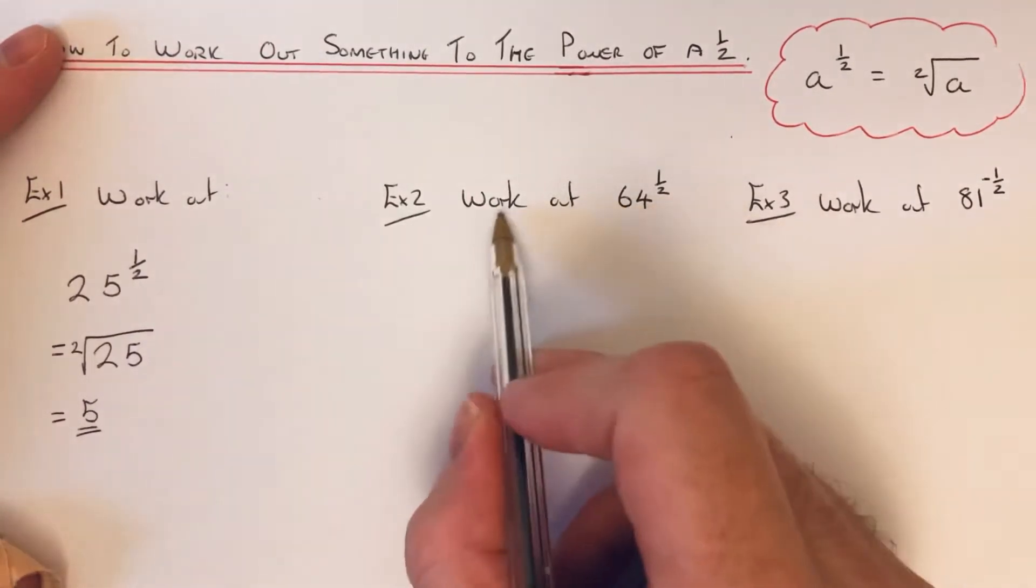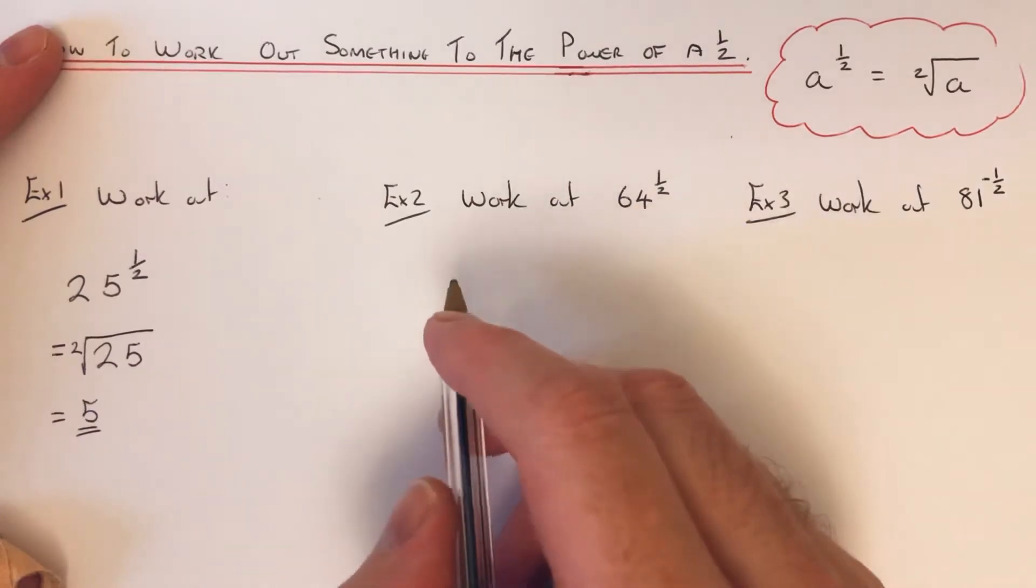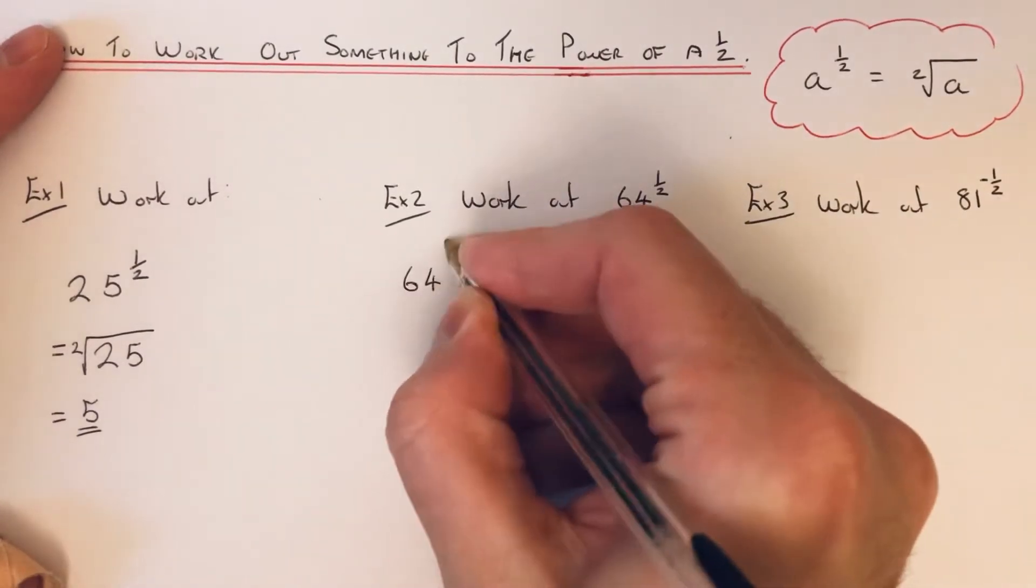So the square root of 25 is 5 because 5 times 5 is 25. So let's move on to example 2. This time we need to work out 64 to the power of a half.